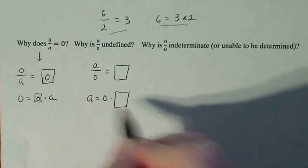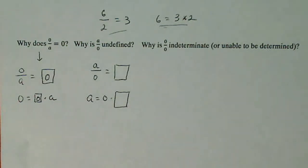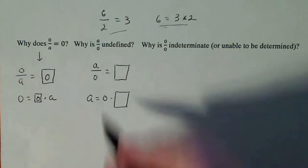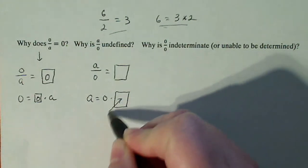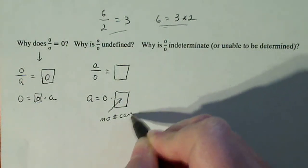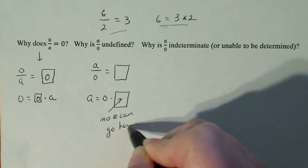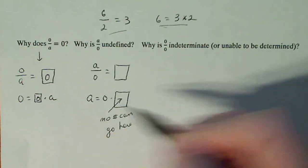And then step back and take a look at that. What number could we possibly put in that box so that when I multiply it times 0, I get a number that is not 0? Well, to be honest with you, there is no number that can go in this spot. No number can go here because any number that I put in here times 0 is going to give me 0.